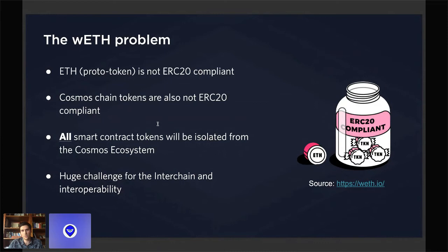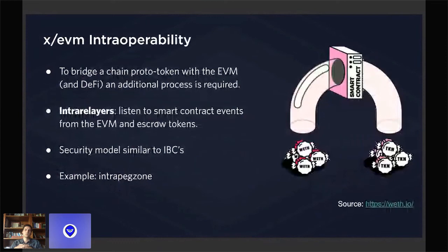This is what ultimately resulted in the Wrapped ETH token within Ethereum. The solution I see is to create an intra-relayer process, basically the same one as Peggy, but that listens to events from the same chain.